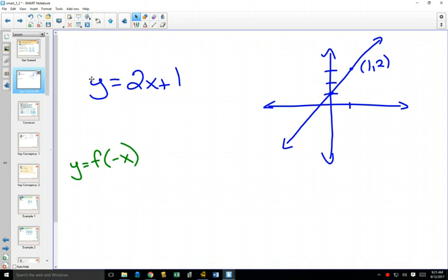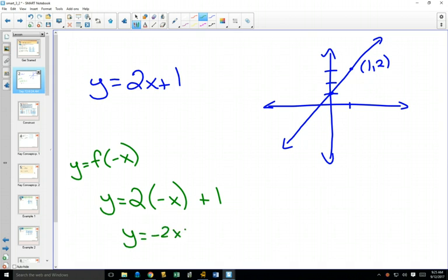And so what would happen to this exact same line? So I'm going to write this exact same line. If I replace the x with a negative x, that would look like this. Now, with lines, if you were asked to graph this, you know how to graph lines. You would simplify, right? And if you simplified this, you would have y equals negative 2x plus 1.